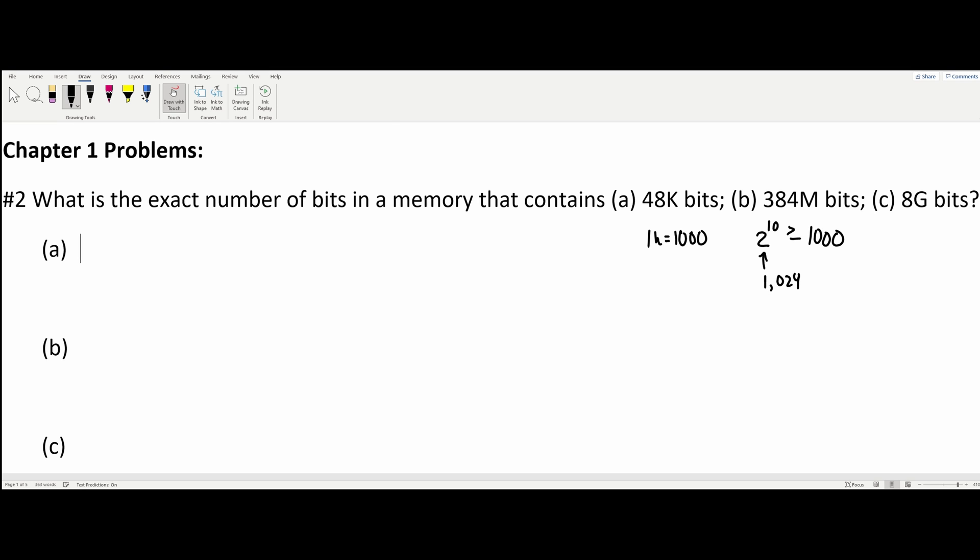So that is 1K bits. To solve for A, we're basically just going to have 48 times 1024, and this is going to give us 49,152 bits. So that is the answer to the first one.